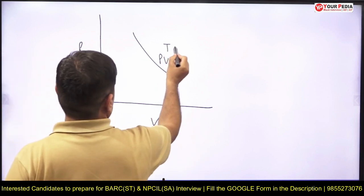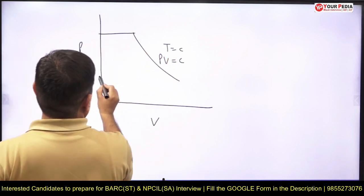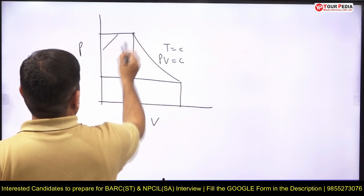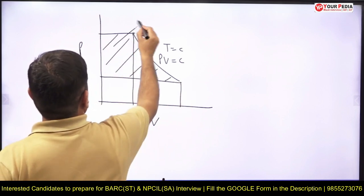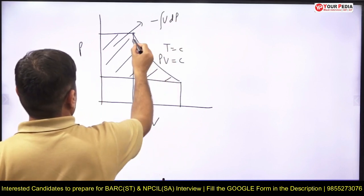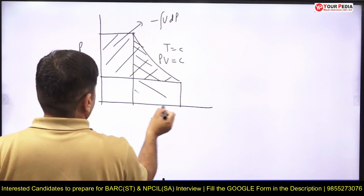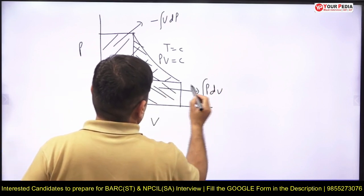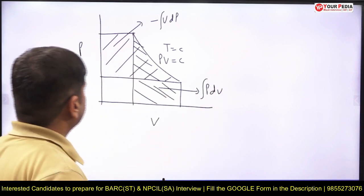So whether you take this area or you take this area, as you know this area is minus VdP area and this area if I calculate is PdV area. So for isothermal process both these areas are same.